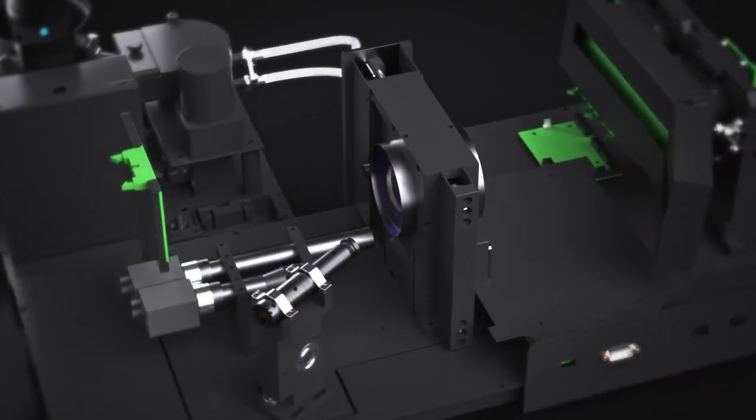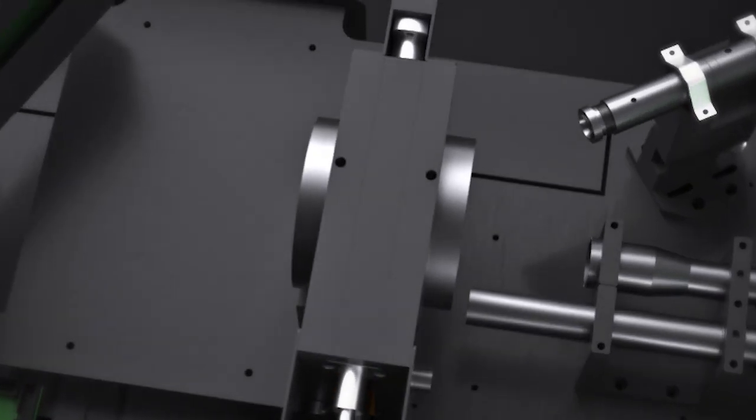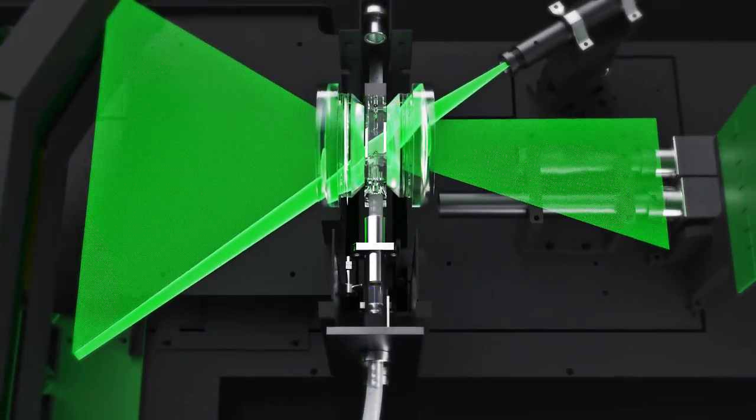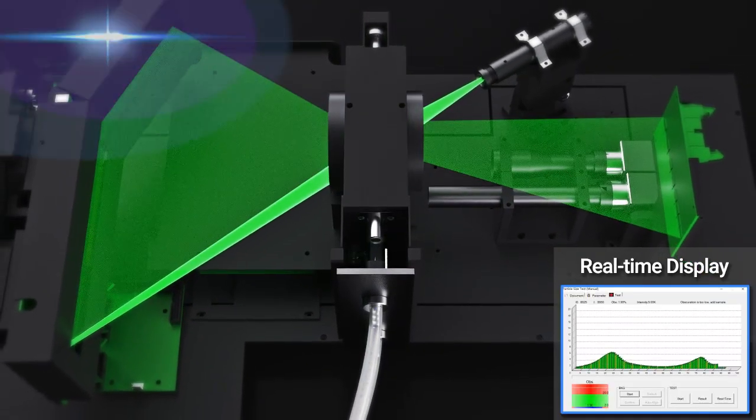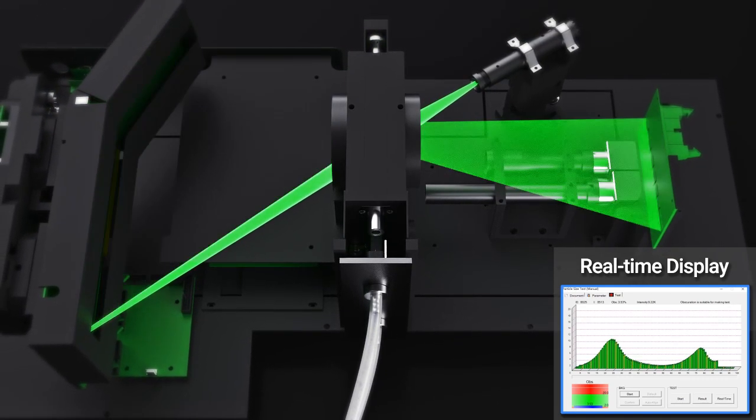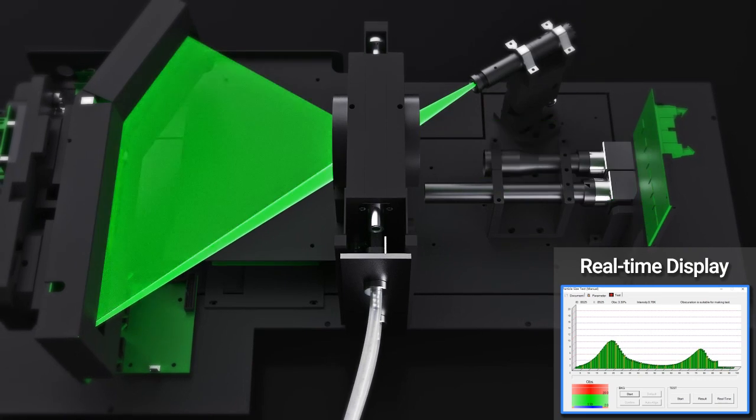Designed in oblique incident structure, it provides a continuous and consistent wavelength scattering spectrum. It also broadens the detection angle range up to 165 degrees. This makes sure that even nanoparticles can be characterized effectively.